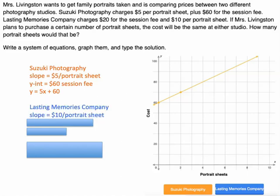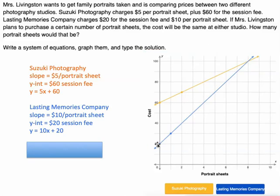Lasting Memories, they charge $10 per portrait sheet and $20 per session fee. So $20 is going to be our y-intercept because this is our equation, 10x plus 20. And up 10 every one portrait sheet. So wait, let's graph it first. So there's that one.